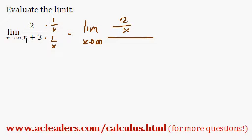Now we have to basically distribute this. 1 over x times x is just 1. 3 times 1 over x is 3 over x.